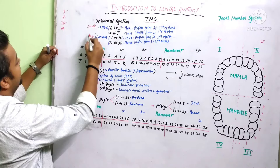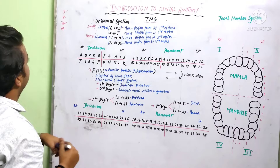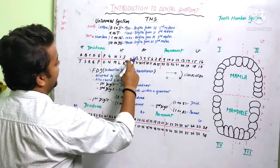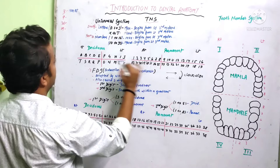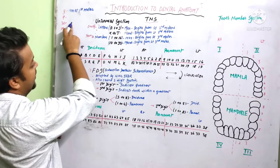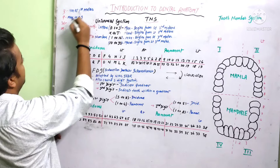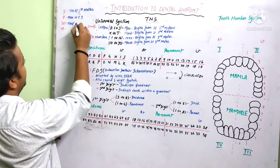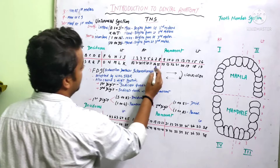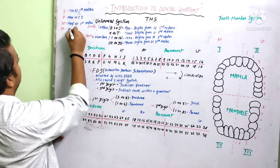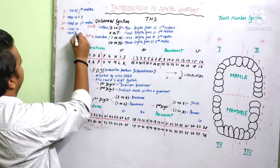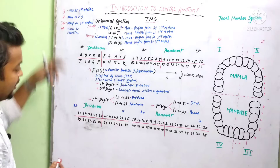Let us solve some questions in the Universal system: 3, 9, 30, and M. Letters are for deciduous and numbers for permanent. Tooth number 3: it is permanent, maxillary right — central, lateral, canine, first premolar, second premolar, first molar — so it is maxillary right first molar. Tooth 9 is maxillary left central incisor. Tooth 30 is mandibular right first molar. Letter M is deciduous, mandibular left canine.